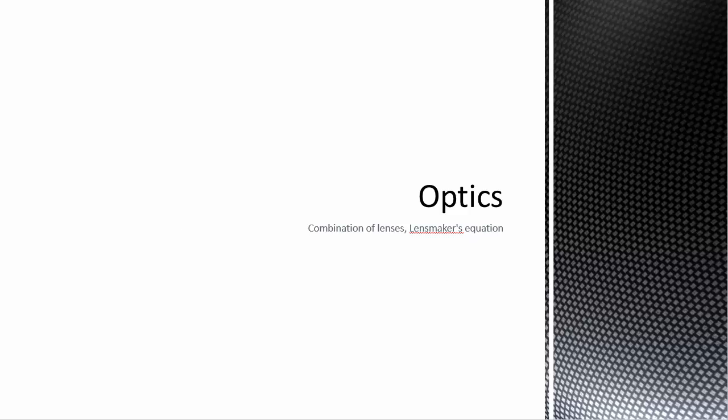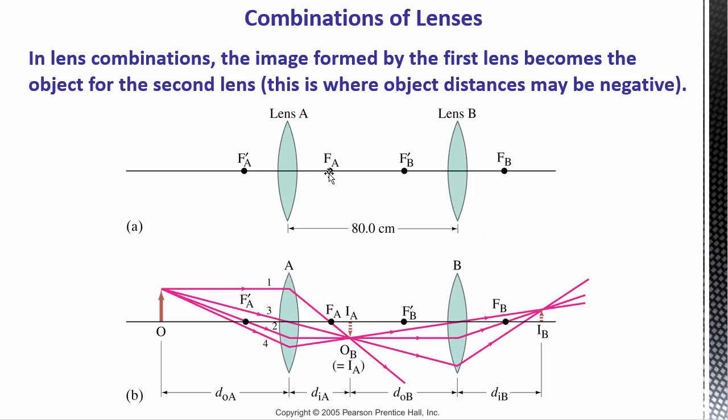Alright, so starting out, let's look at a combination of lenses, which isn't too much different than doing a single lens, only you have to do it more than once, but there is one little additional complication. We typically call the first lens lens A and lens B, and what happens is the image from lens A becomes the object for lens B.